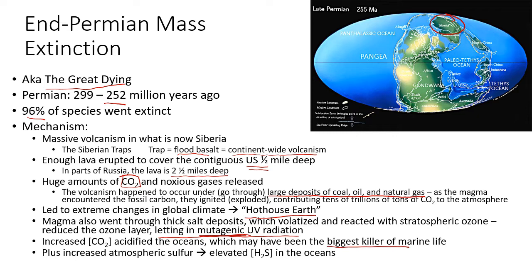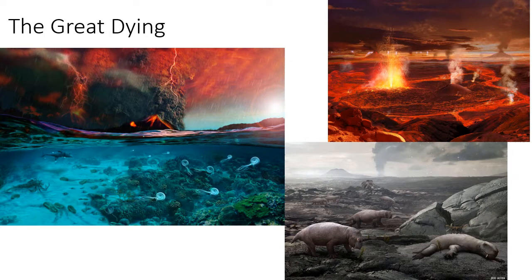Increased CO2 acidified the oceans, which may have been the biggest killer — the largest losses were in the oceans. Hydrogen sulfide levels also elevated in the oceans: the oceans became warmer, more acidic, lost dissolved oxygen, and gained toxic hydrogen sulfide, which gives rotten eggs their smell. This was also during the time of Pangaea as the supercontinent. In total, 96% of species went extinct. The Permian was notable because the mammal-like reptiles — ancestors of modern mammals — were the dominant organisms on land, including apex predators like gorgonopsids.